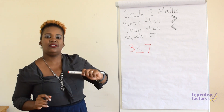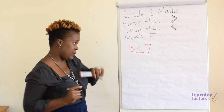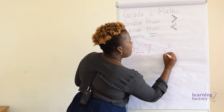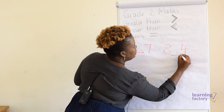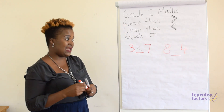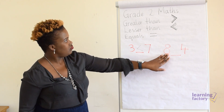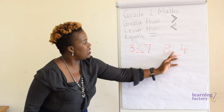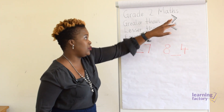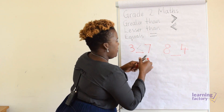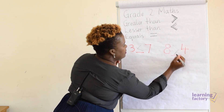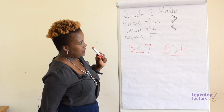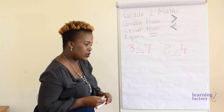Put the sign without the crocodile teeth — just leave it like that — and make sure your sign is always eating or facing the bigger number. Our next numbers are eight and four. Eight — is it greater than, less than, or equals four? Eight is greater than four, so let's put our greater than sign. Remember not to put the crocodile teeth.